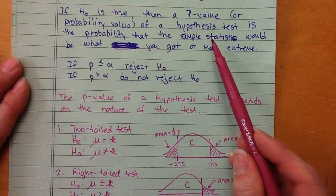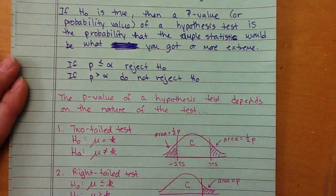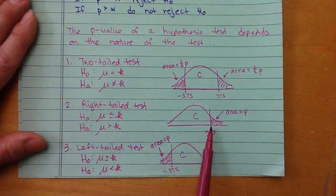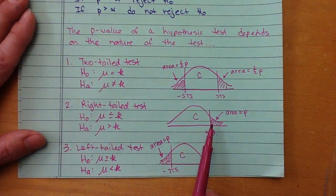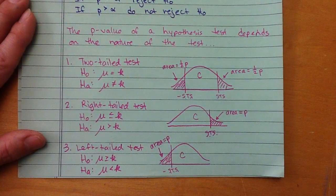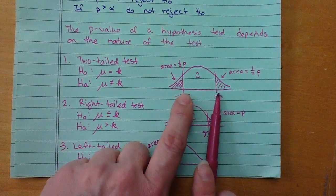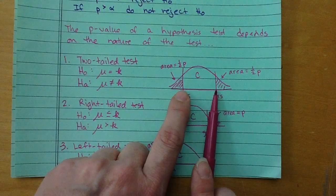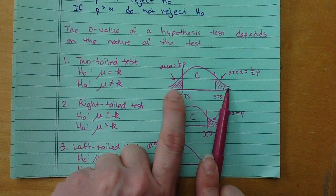The p-value is the probability that our sample statistic would be what we got or more extreme. In a right-tailed test, it's the probability our sample ended at this value or further to the right. In a left-tailed test, it's the probability of ending at that value or further to the left. In a two-tailed test, it's the probability of being bigger than one value or smaller than the other.